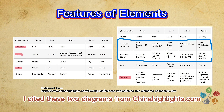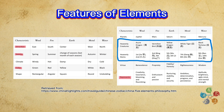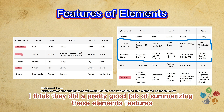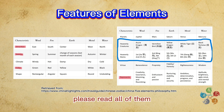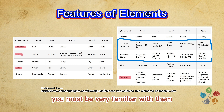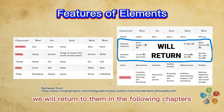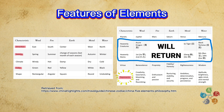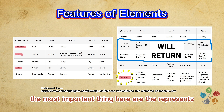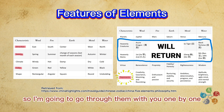Features of elements. I cited two diagrams from ChinaHighlights.com — I think they did a pretty good job of summarizing these elements' features. Please read all of them, especially the highlighted ones; you must be very familiar with them. You can leave the two roles for now — we will return to them in the following chapters. The most important thing here are the representations, so I'm going to go through them one by one.